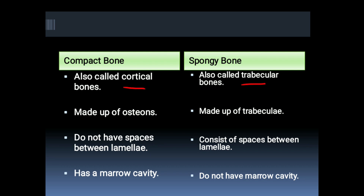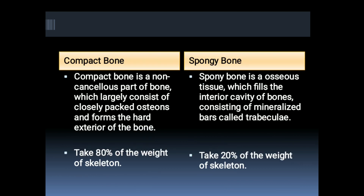Compact bone is made up of osteons, while spongy bone is made up of trabeculae. Compact bone does not have spaces between the lamellae and has a narrow cavity. Compact bone is the non-cancellous part of a bone.